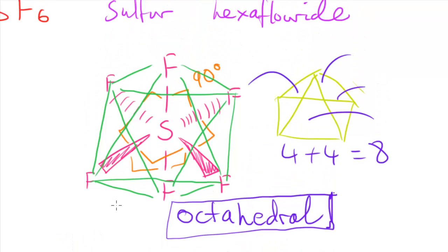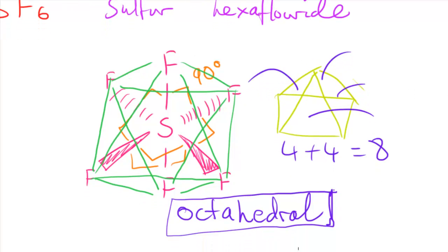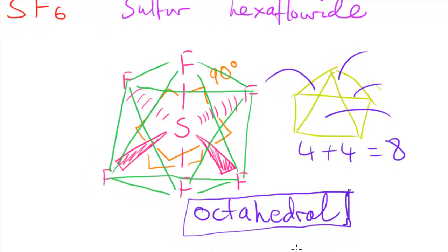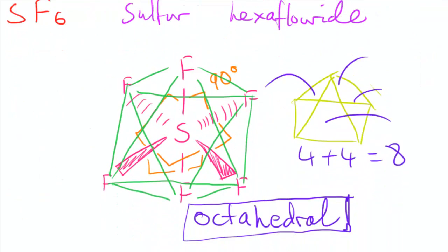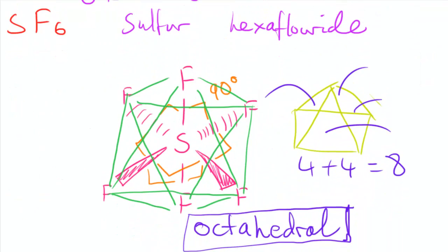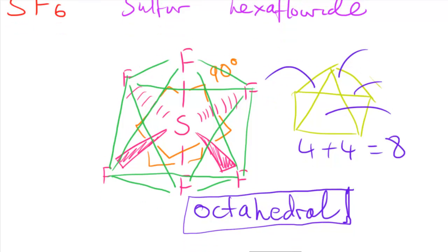This is what SF6 looks like and the name for it is octahedral. This is more or less all the different structures you might encounter. I hope this video was helpful — see you in the next one.